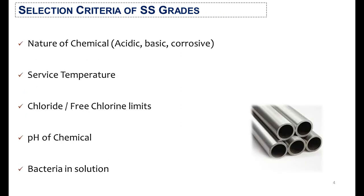SS grades are selected based on the nature of the chemical — whether it is acidic, basic, or corrosive — the service temperature, the chloride or free chloride limits, and the pH of the chemical.